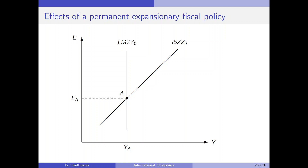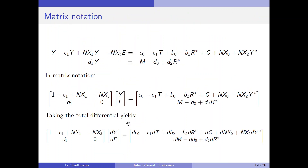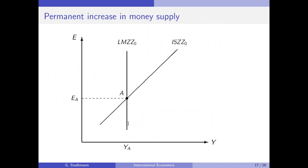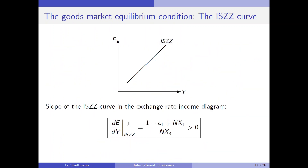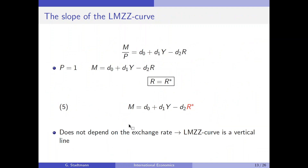In case we have no clue which curve shifts in which direction, we have to think about the equilibrium conditions. Looking at slide 13, we find the money market equilibrium condition. Can you see government spending here? No. Since there is no government spending included, the LMZZ curve will not shift.